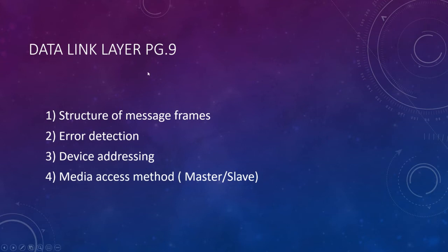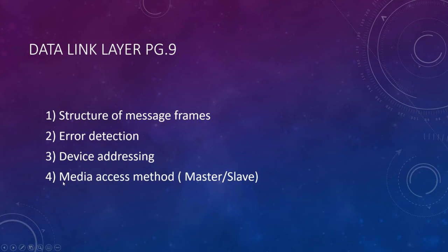Next, we talk about what goes on in an industrial network at the OSI data link layer. Things in the data link layer are focused on the structure of message frames — which gets a bit more complicated than frames we've looked at before — error detection, addressing, and media access method. The only one we've really talked about so far was master-slave, but we'll cover a couple others here.